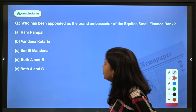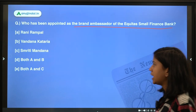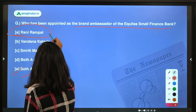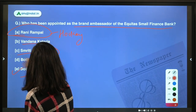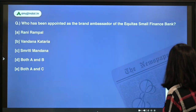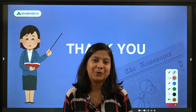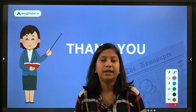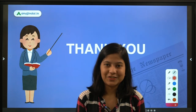The last question: who has been appointed as Brand Ambassador of Equitas Small Finance Bank? The answer is Rani Rampal, the hockey player, and Smriti Mandhana, the cricketer — both have been chosen as brand ambassadors. That was all for today. Don't forget to come at 10 AM to cover the August Spotlight. Thank you for watching the session.